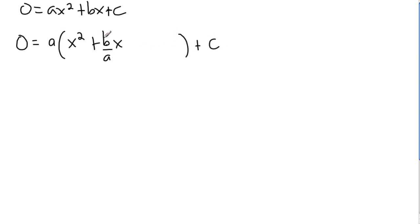Now the reason this is equivalent: if I expand and check, a times x squared gives ax squared, and a times b over a — the a's cancel — just gives b. So this may look a little strange, but we have to take out an a even if there wasn't an a in front of the x term.